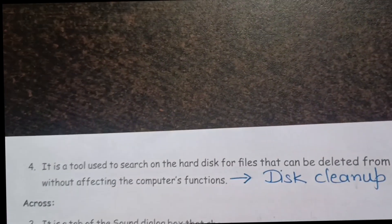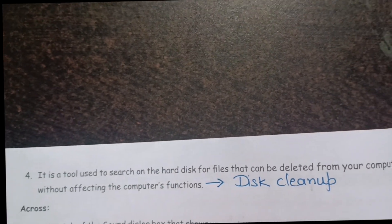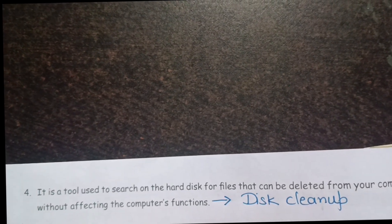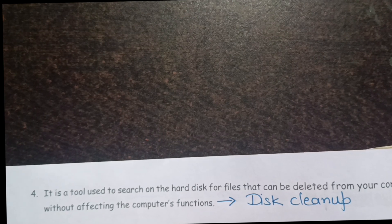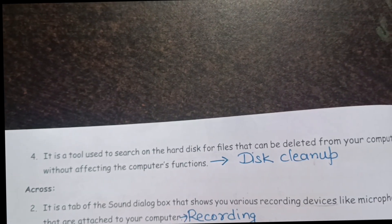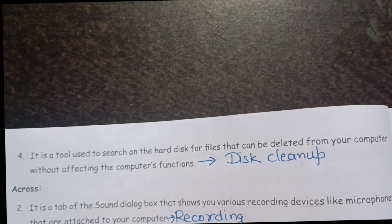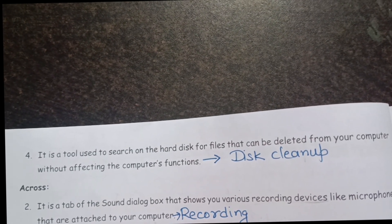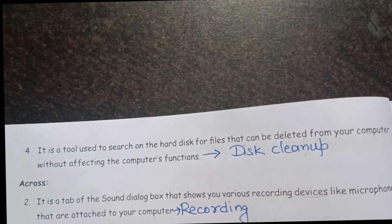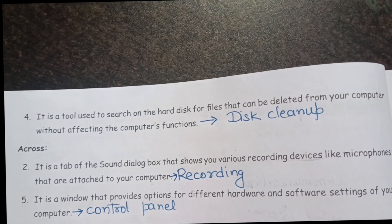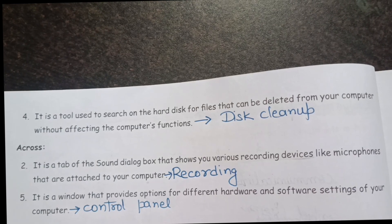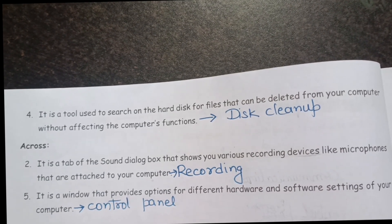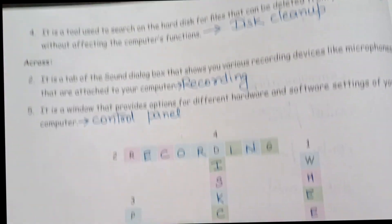Third clue: It is a tool used to search the hard disk for files that can be deleted without affecting the computer's function — the answer is Disk Cleanup. Fourth clue: It is a tab of the Sound dialog box that shows various recording devices like microphones attached to your computer — the answer is Recording. Fifth clue: It is a window that provides options for different hardware and software settings of your computer — the answer is Control Panel.